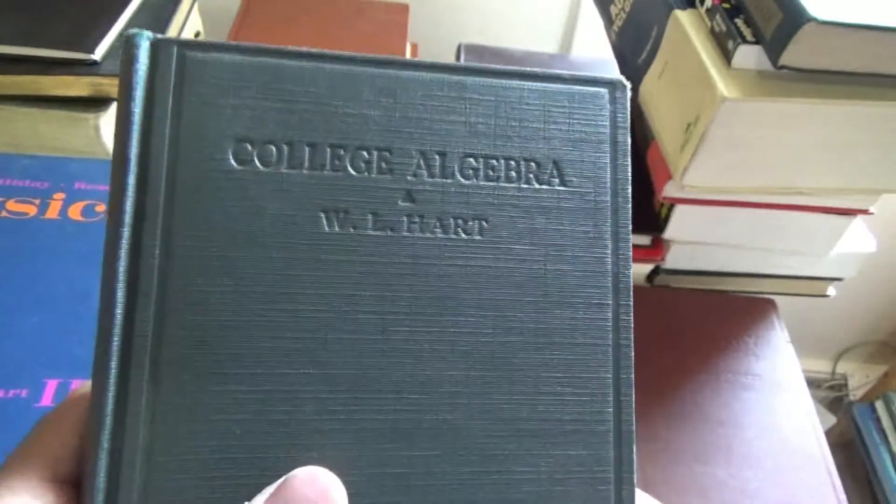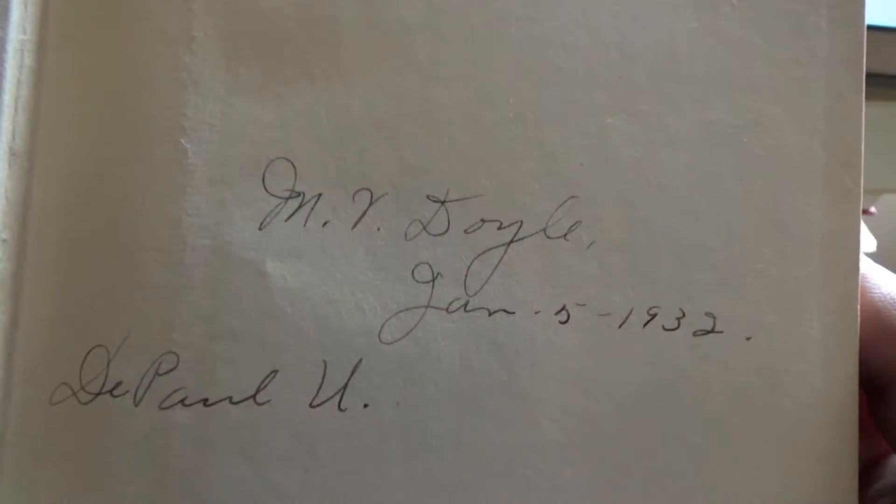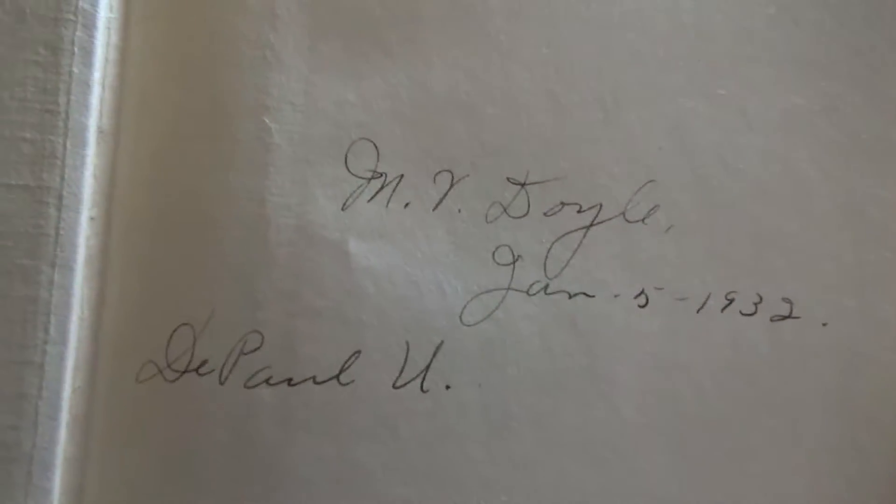Now let's go a little bit back into the past. College Algebra. Wow. Now, this one's even more compact. I really like this book. It's so cute looking. And this cover is really solid. You can knock somebody out by just hitting them on the head with it. M.V. Doyle? Maybe? January 5th, 1932. DePaul University.